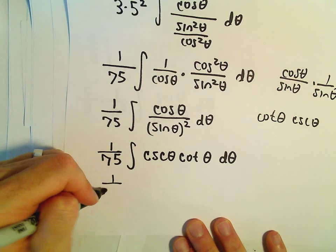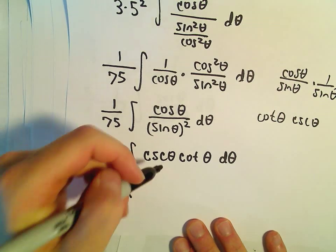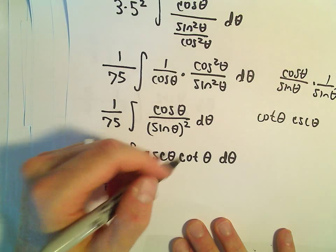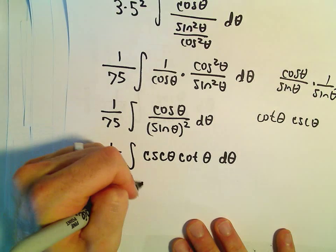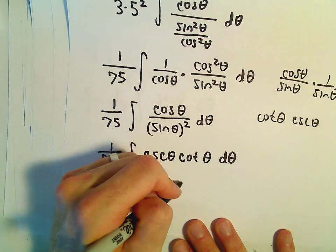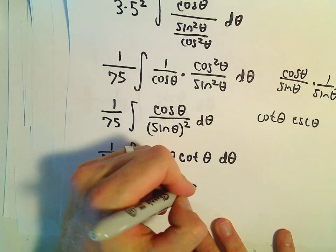Let's see. So we've got 1 over 75. So the anti-derivative of cosecant theta, cotangent theta, will be negative cosecant theta plus c.